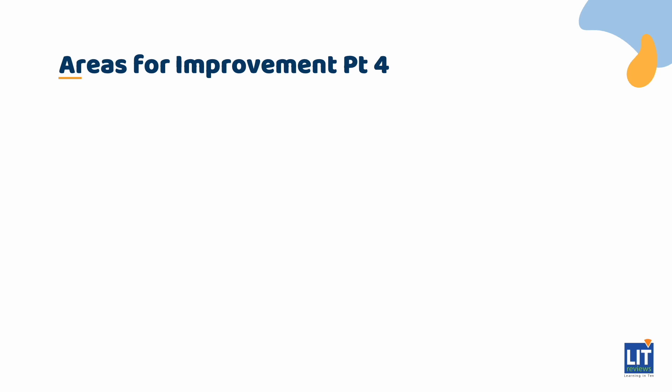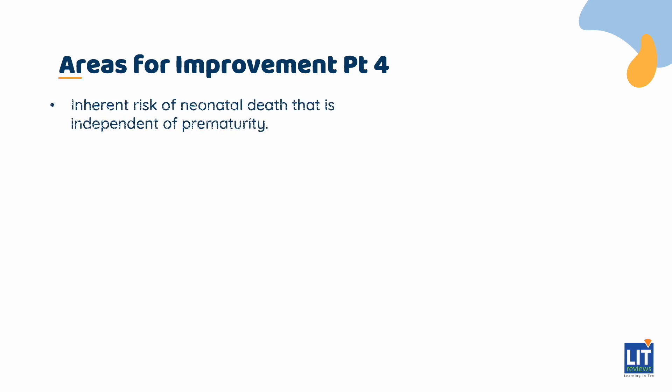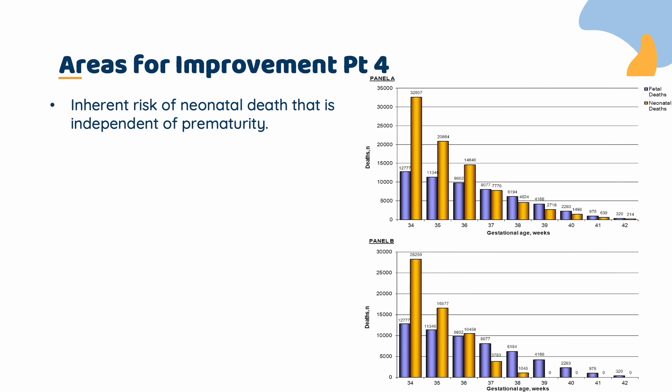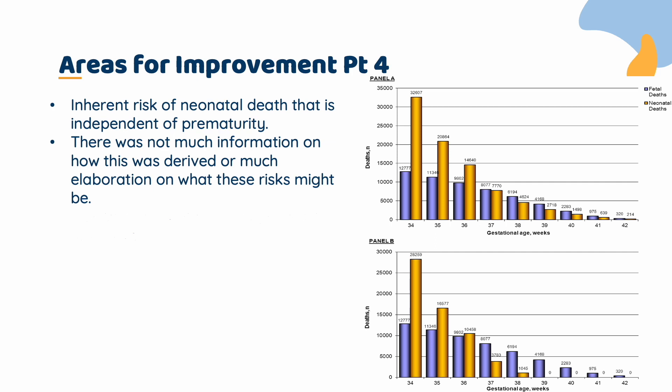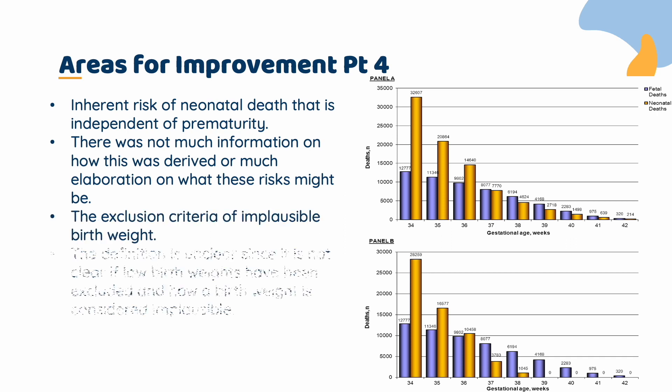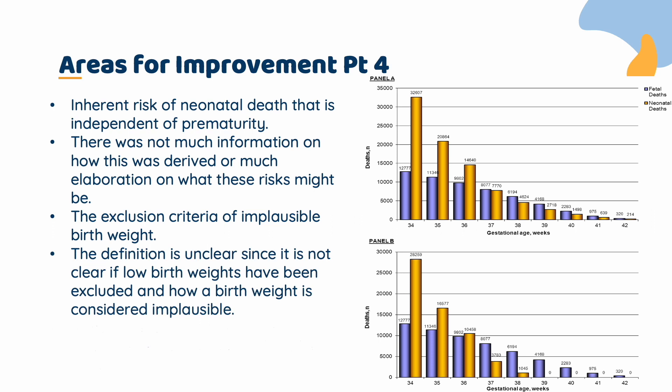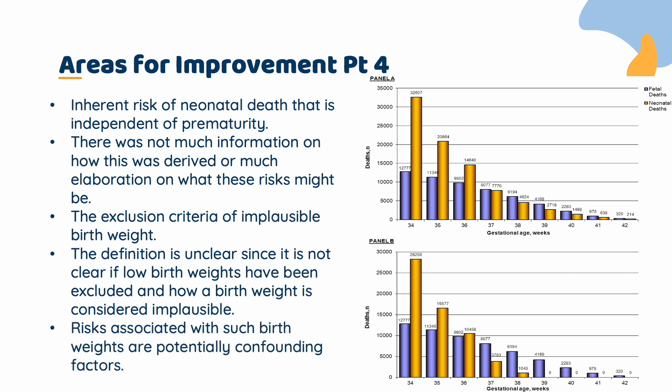Another questionable method is what the authors termed as inherent risk of neonatal death that is independent of prematurity. This is what was used to generate figure 3b, but there was not much information on how this was derived or much elaboration on what these risks might be. The next point that needs clarification is the exclusion criteria of implausible birth weight. The definition is unclear since it is not clear if low birth weights have been excluded and how low or high a birth weight is considered implausible. Risks associated with such birth weights are potentially confounding factors.